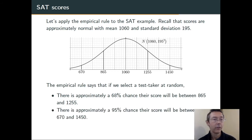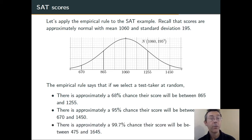Similarly, if we select someone at random, there's a 95% chance approximately that their score is going to be between 670 and 1450. And if we go a third standard deviation above 1450 and below 670, we get 99.7% of the probability. So, almost certainty.